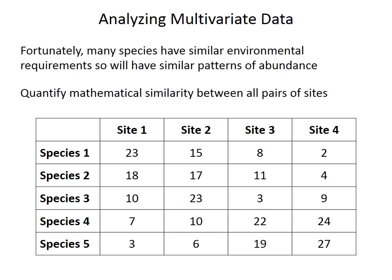There is redundant information that allows us to simplify this data and reduce the number of variables — from 5 in this case, because there are 5 species — to a smaller number that we can interpret more easily. These methods quantify the mathematical similarity between all pairs of sites.